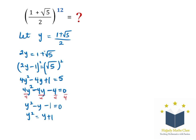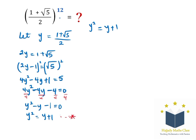Let's take note of this as equation star, because we are going to use this formula. We have y² = y + 1. From the original question, we have (1 + √5)/2 to the power of 12, which equals y^12. Raising both sides of y² = y + 1 to the power of 6, we get y^12 on the left-hand side.